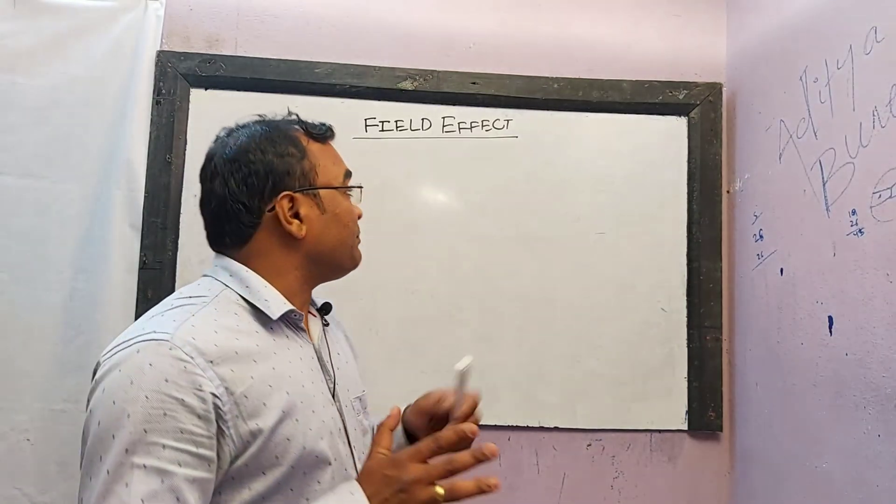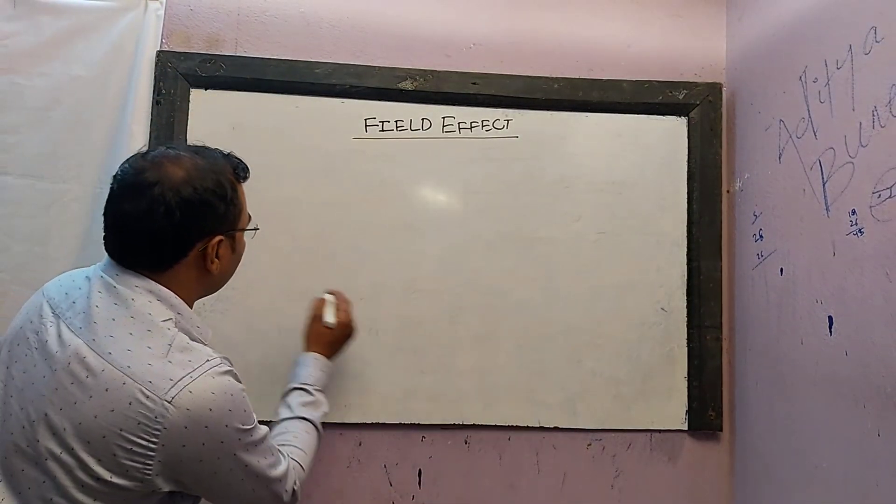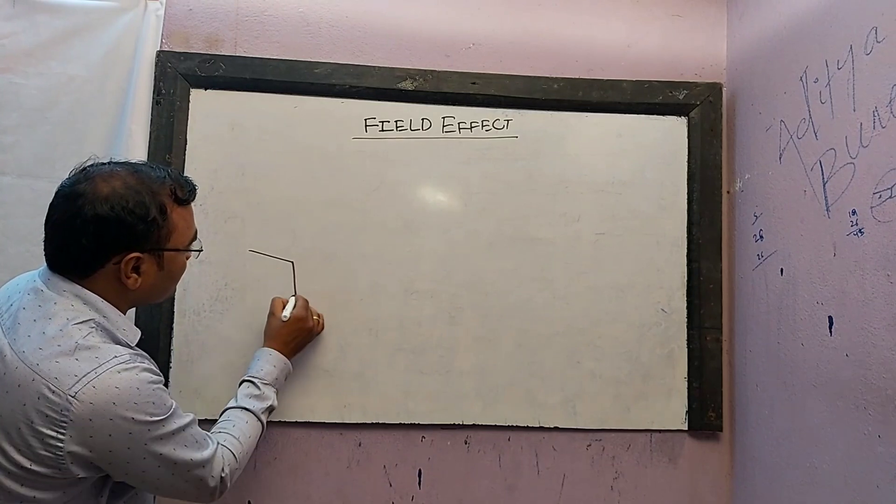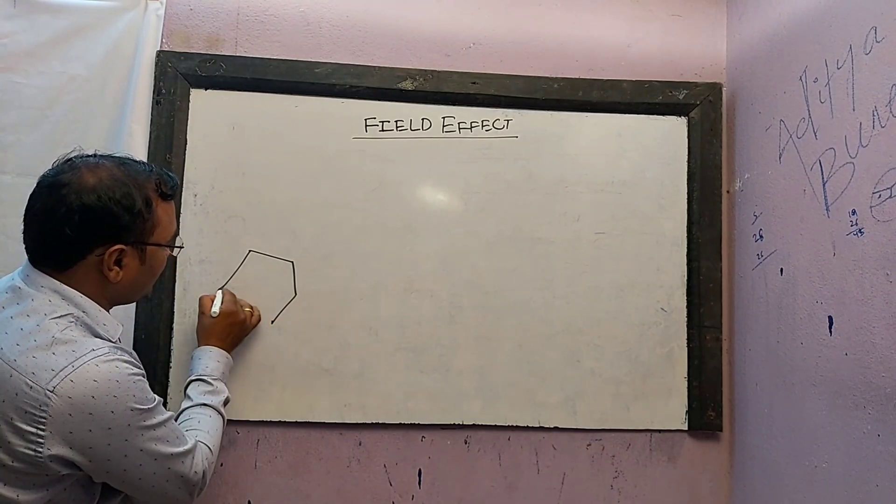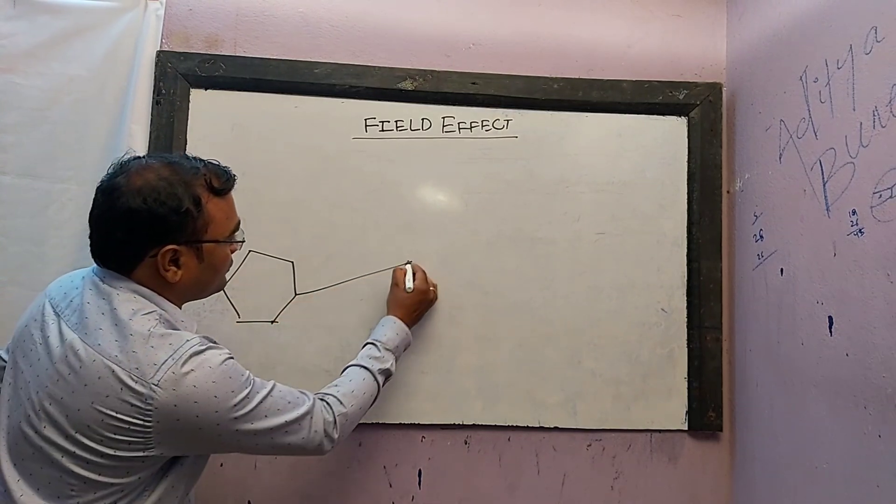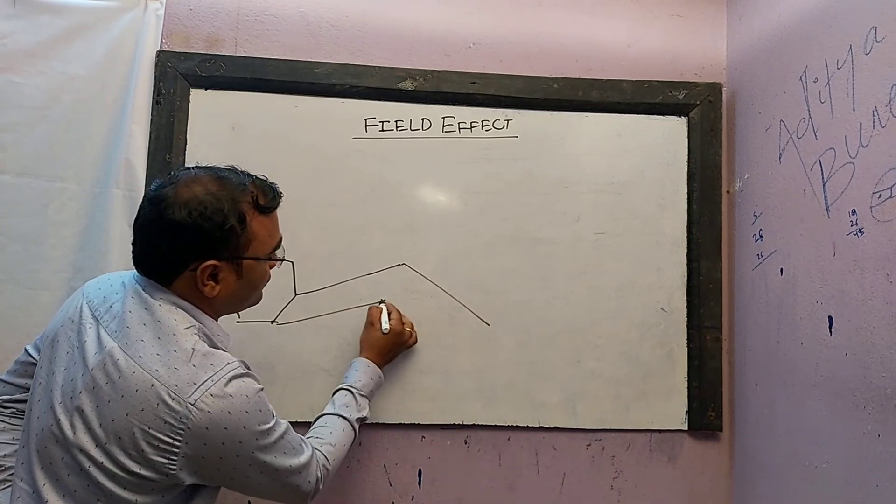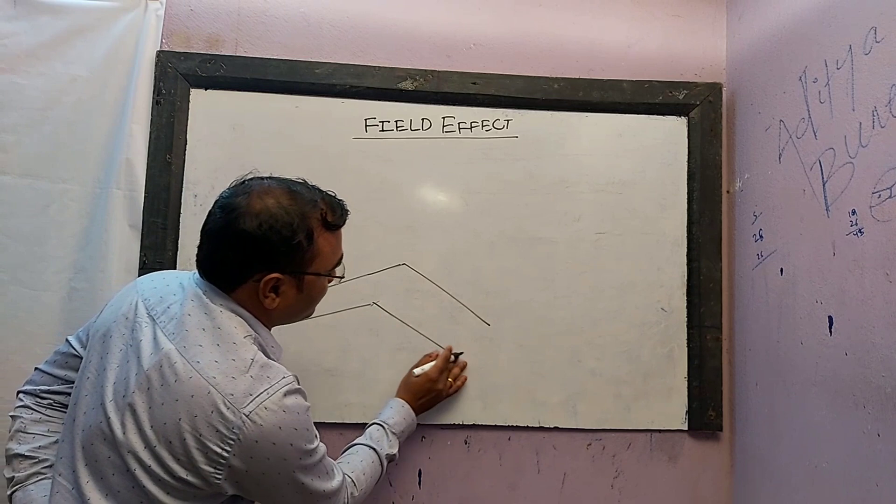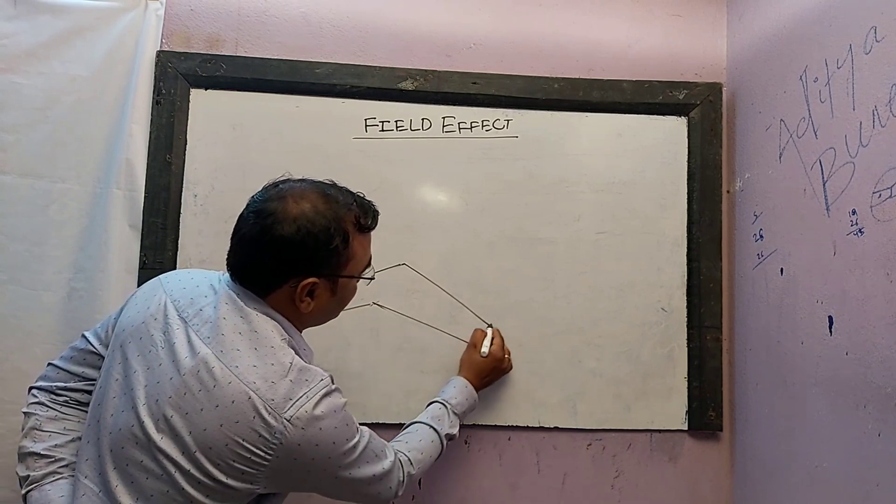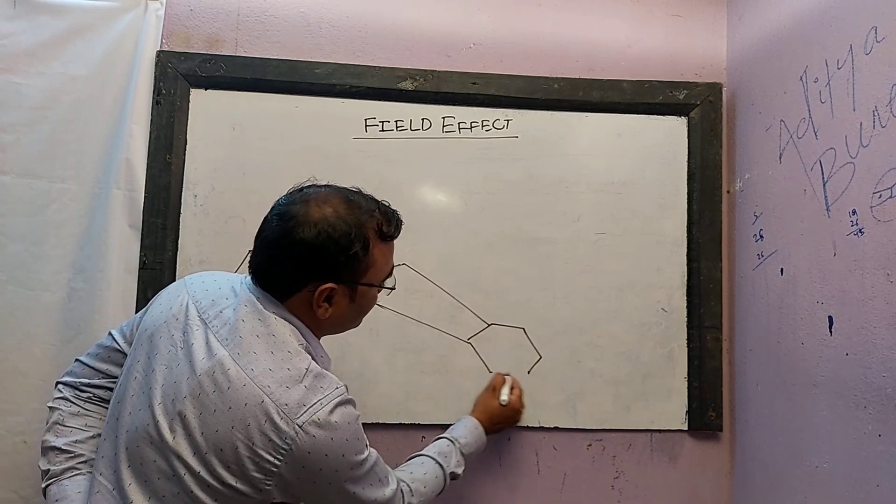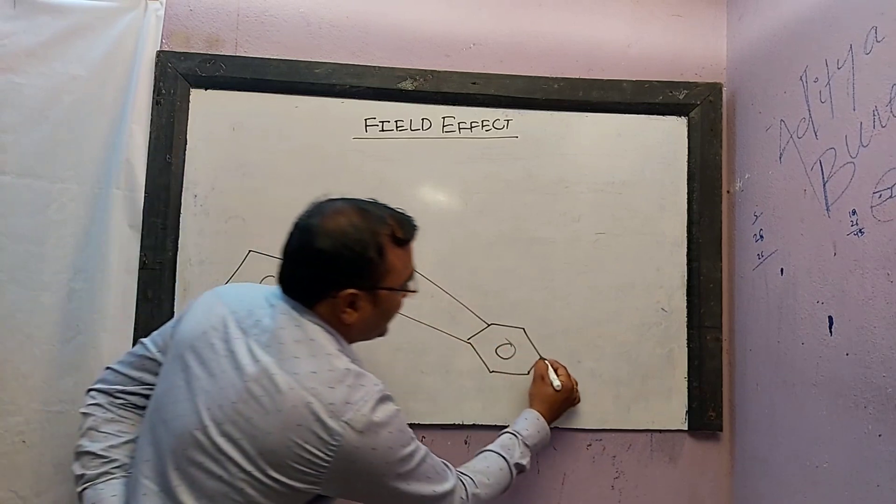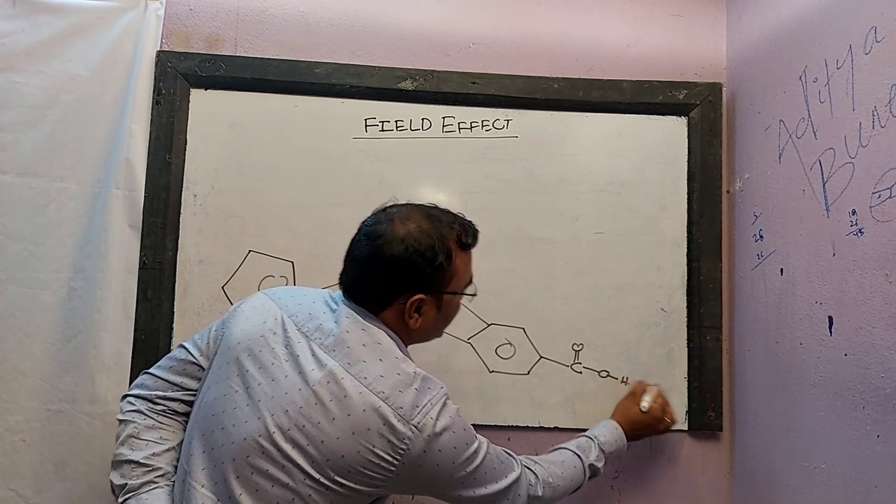Let me show you how the field effect is. This is an example of a carboxylic acid, C double bond O O H.